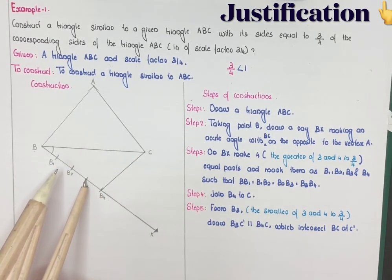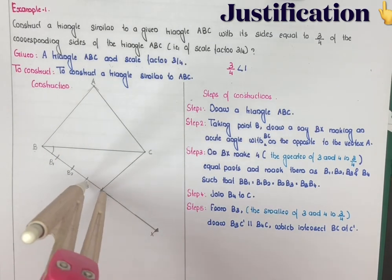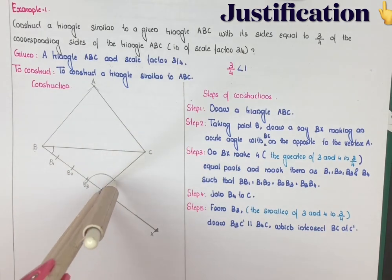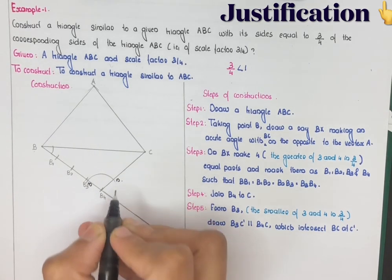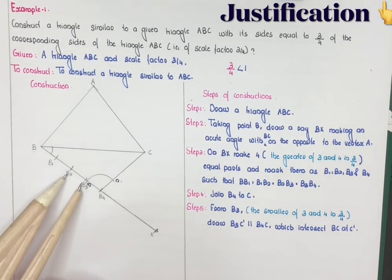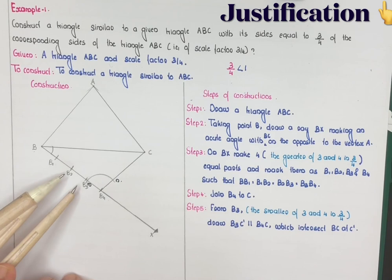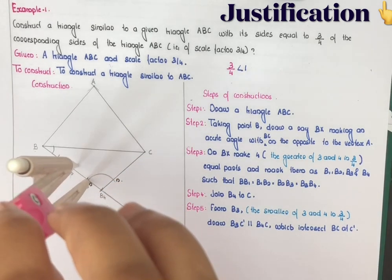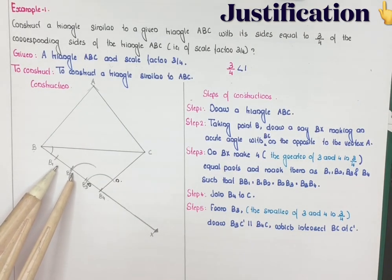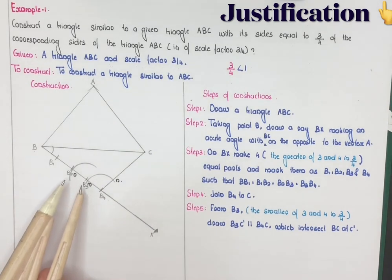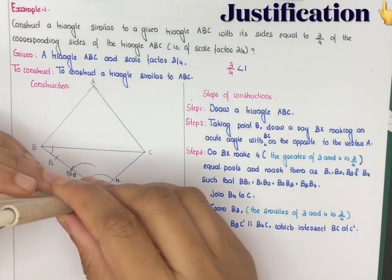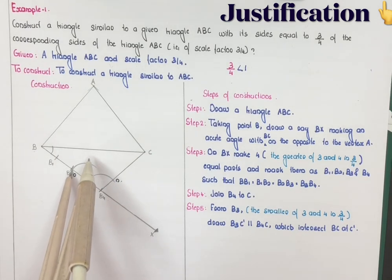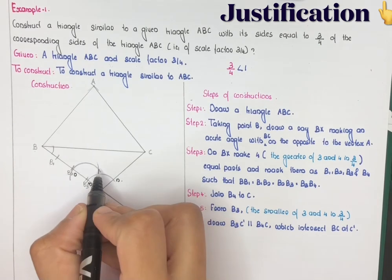To draw B3C' parallel to B4C: place the compass pin at B4 and draw an arc cutting ray BX at point M and line B4C at point N. With the same radius, place the compass pin at B3 and draw an arc cutting ray BX at point O. Measure arc length MN, then with the same measurement place the compass at O and mark point P. Join B3 through P to intersect BC at C'.